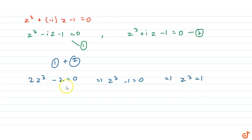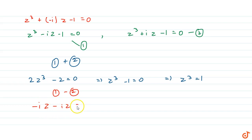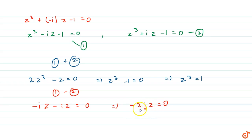Now subtracting equation 2 from equation 1, we get iz - (-iz) = 0, which gives -2iz = 0. Since 2 ≠ 0 and i ≠ 0, we get z = 0. Call this equation 4.